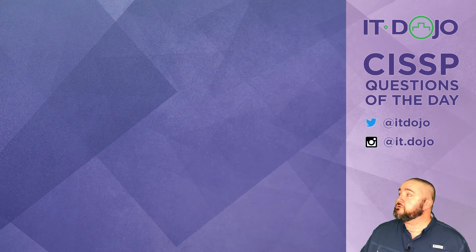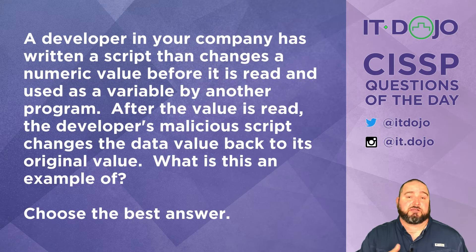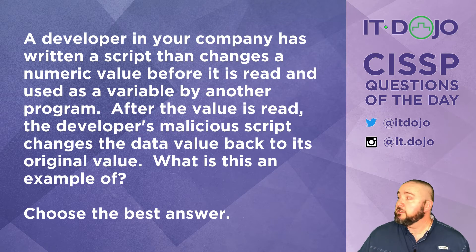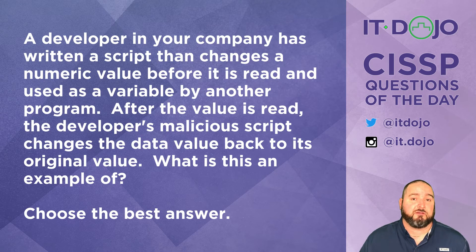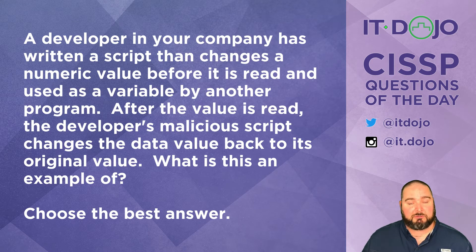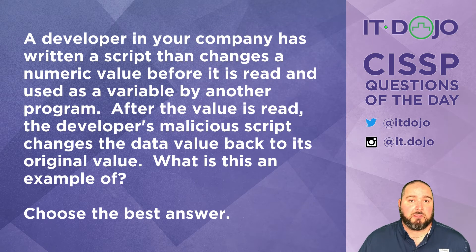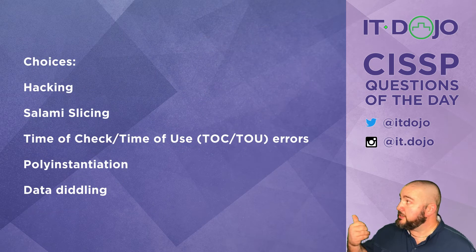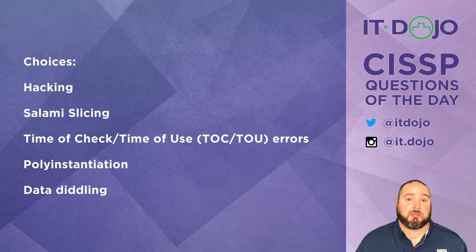Here comes question number two. You have a developer at your organization who has written a script that changes a numeric value in a field just prior to it being used by another program as part of its calculations, and then after the value has been read by the legitimate program, the malicious script sets the value back to its original value. What is this an example of? Here are your answer choices — give it some thought, click pause if you need to, and when you're ready click play and we'll break it all down.